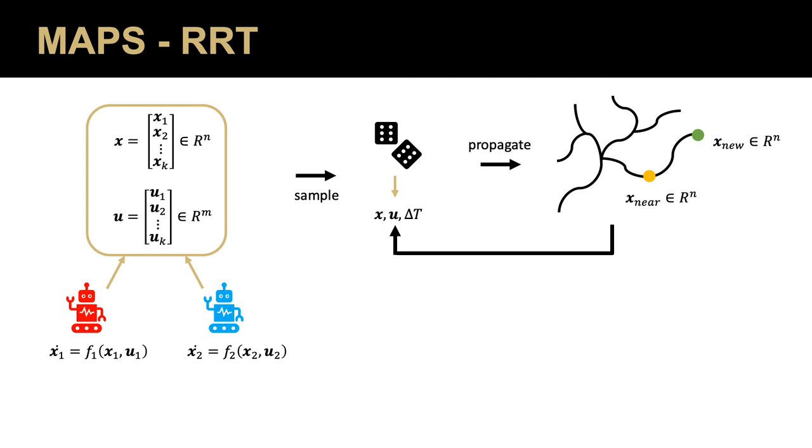Regular RRT would just continue this process many times in Rn until it finds a solution. Maps RRT goes a step further, however, by projecting each node onto a two-dimensional workspace. The result would look something similar to what you see on your screen. Since we include collision checking into the planning loop, we know this trajectory is valid. It's just hard to verify.